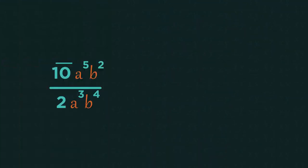For division, you can cancel out the numbers exactly as you would with fractions. And we can also cancel out letters. So, 10 divided by 2 is 5.